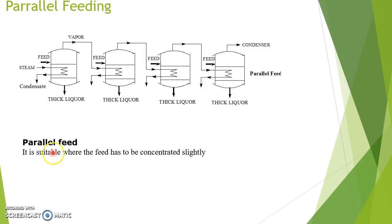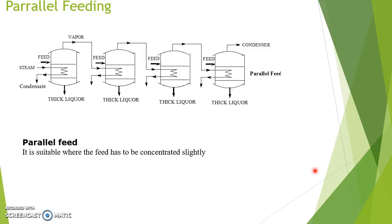Parallel feeding is suitable where the feed has to be concentrated only slightly. In this case, feed is entered separately into each evaporator — first effect, second effect, third effect, and fourth effect — and from each evaporator a thick liquor product is collected. So, this covers the feeding arrangements of a multiple effect evaporator. You should now understand what evaporation is and the different methods of feeding arrangement in the case of a multiple effect evaporator, along with their advantages and disadvantages. Thank you.